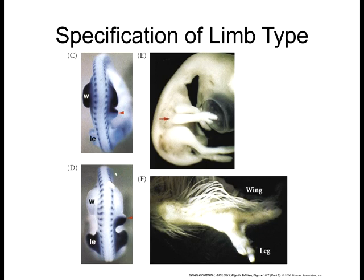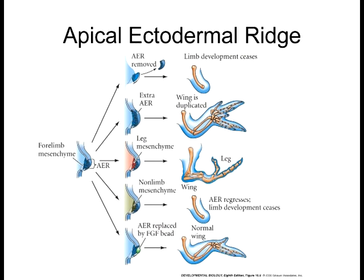Here's an example of the experiment where they had a third bud forming — half of it's a wing and half of it's a leg. Back to the apical ectodermal ridge: they did two types of experiments — one where they induced new formation of a whole limb bud, and another where they transplanted an AER. If you transplant the AER to another region, you will get the limb growing out from that region as well. That's how critical it is for patterning.